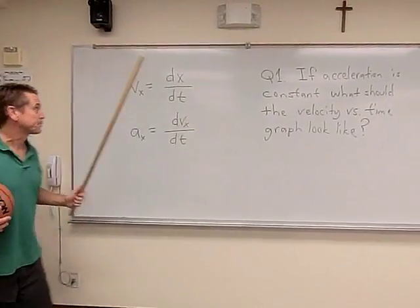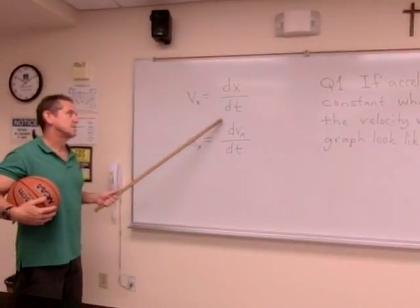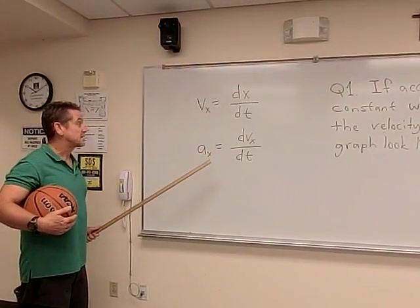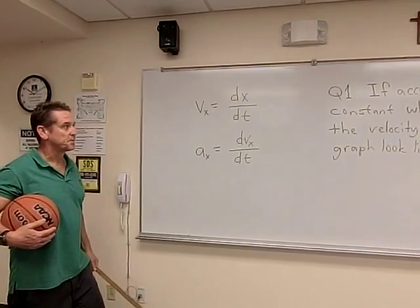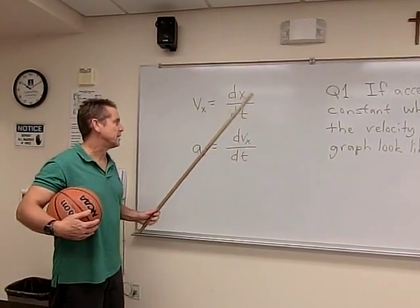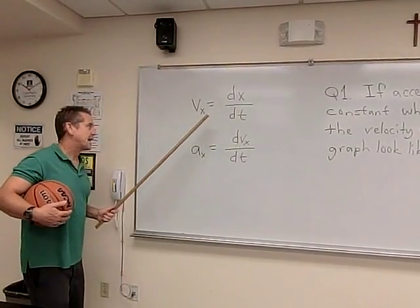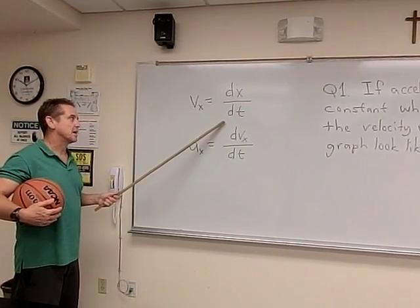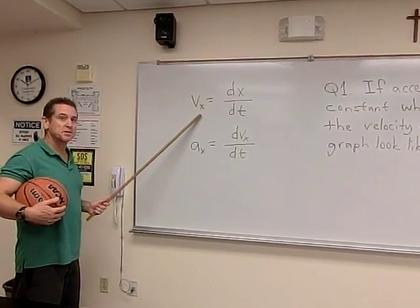Remember, velocity is the time rate of change of position, and acceleration is the time rate of change of the velocity. We remember from last week that if you have a graph of position versus time, then the velocity is represented by the slope.